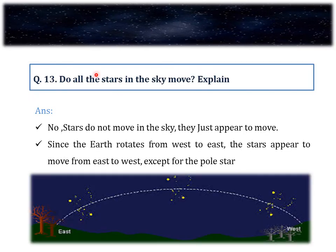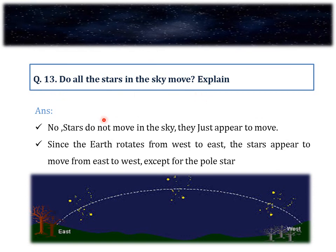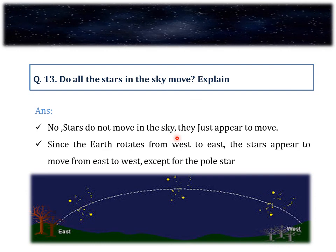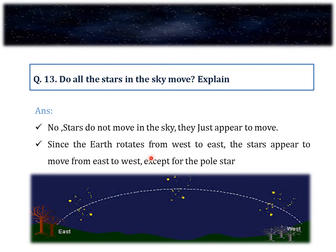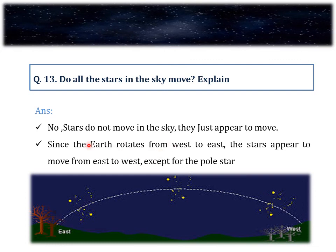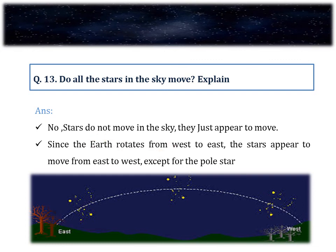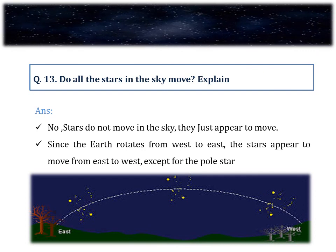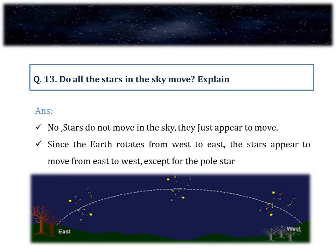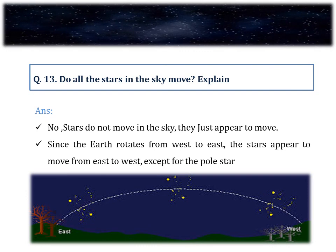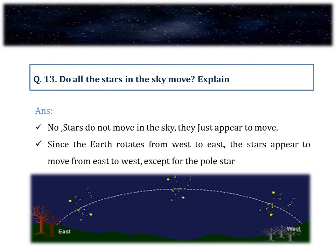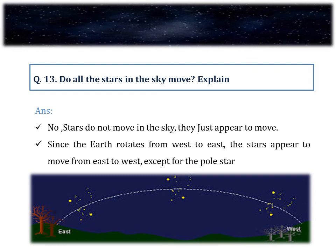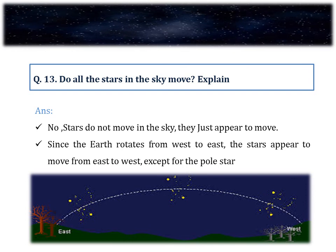Question number 13. Do all the stars in the sky move? Explain. The stars do not actually move in the sky; they just appear to move. Since the earth rotates from west to east, the stars appear to move from east to west — just like when we are moving in a train, nearby trees and buildings appear to move backward. The only exception is the Pole Star, which does not appear to move.